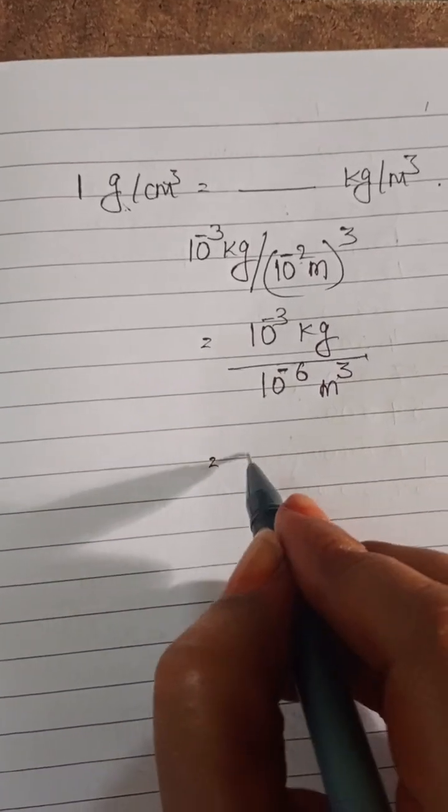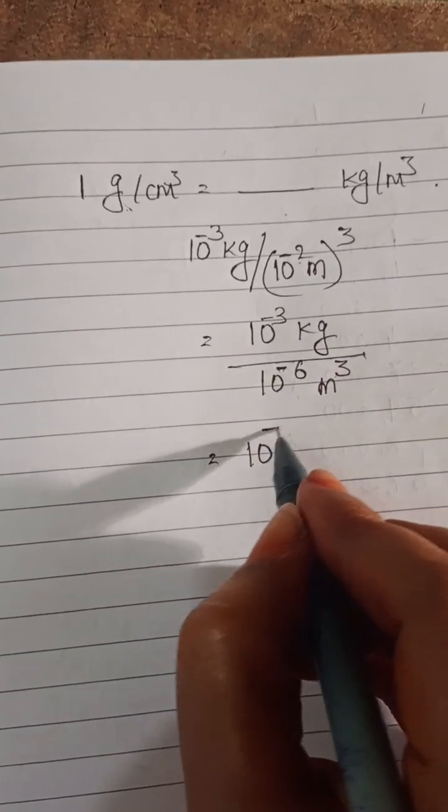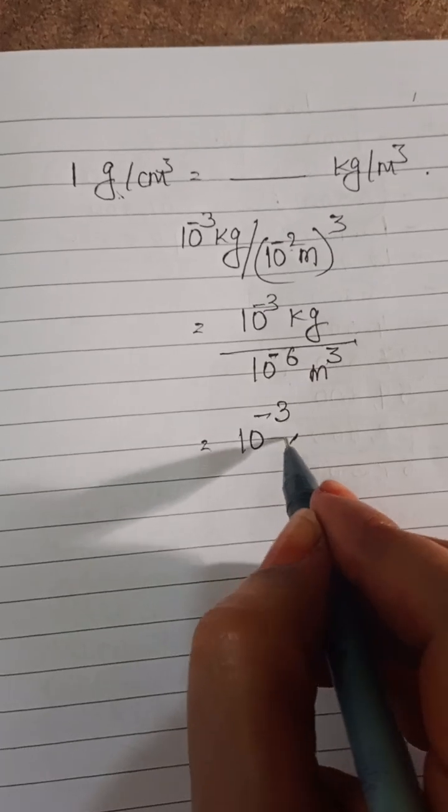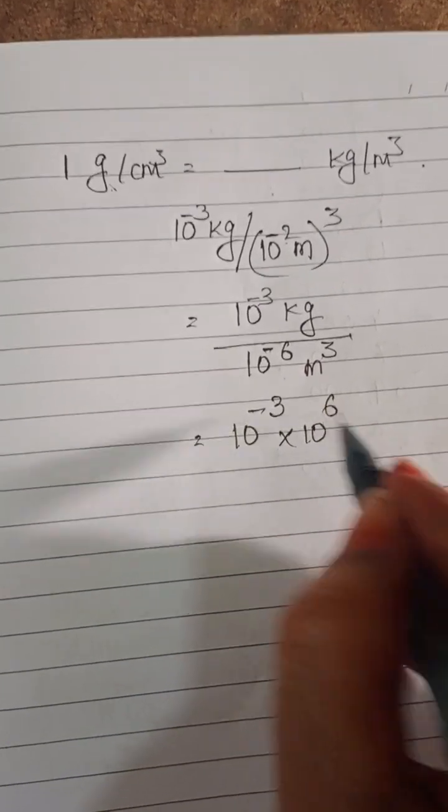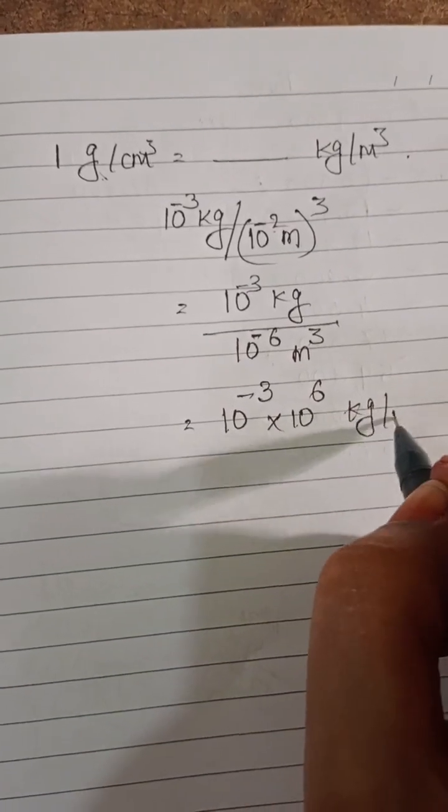10 power minus 6 goes to numerator. It becomes plus 6. 10 power minus 3 into 10 power plus 6 kg per meter cube.